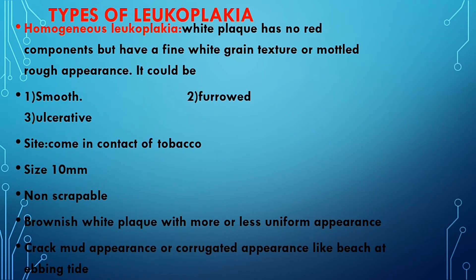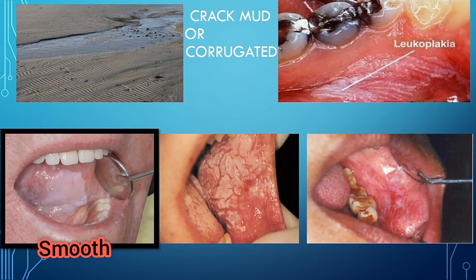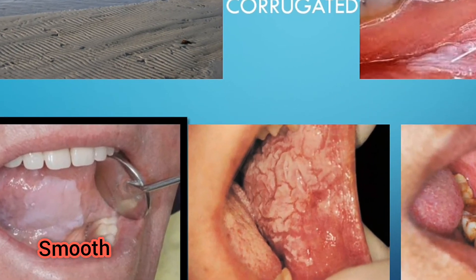There are two types of leukoplakia: homogeneous leukoplakia and non-homogeneous leukoplakia. In homogeneous leukoplakia, the white plaque has no red components but has a fine white grainy texture or a mottled rough appearance. It has no red components — only white — with a grainy texture. Homogeneous leukoplakia can be smooth, furrowed, or ulcerative.